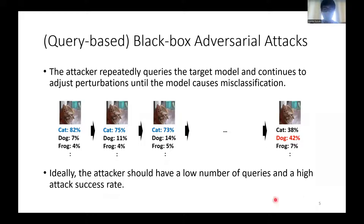An untargeted attack is successful if it lowers the confidence score of the true class and misclassifies it as any other class, such as a clock or a dog, rather than the correct class like cat.